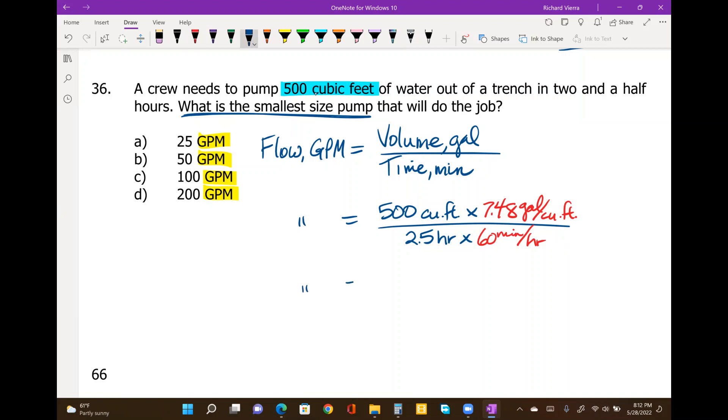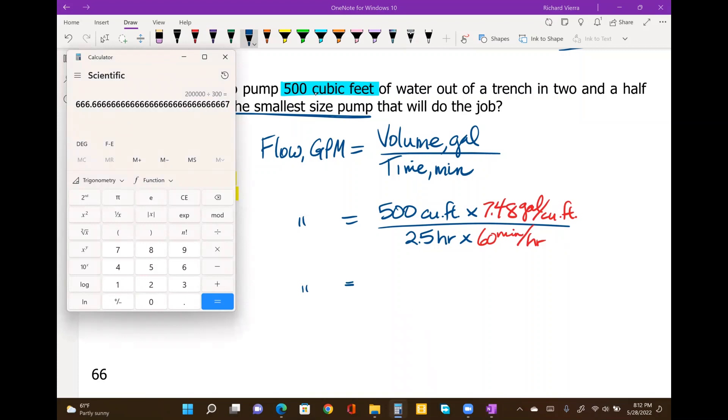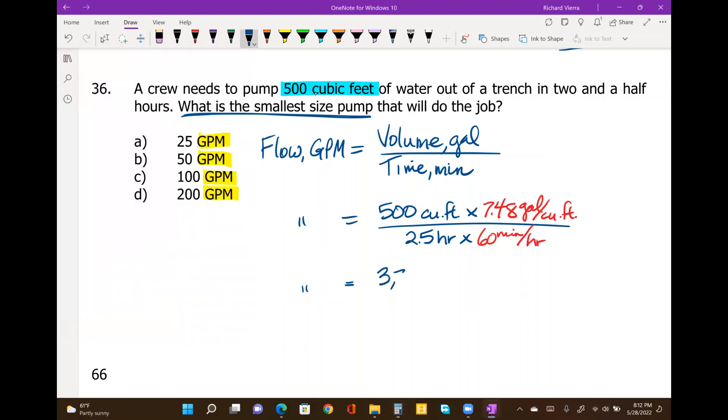So let's go ahead and figure out how many gallons, how many minutes. 500 times 7.48 comes out to 3,740 gallons. So we have to pump a total of 3,740 gallons out of